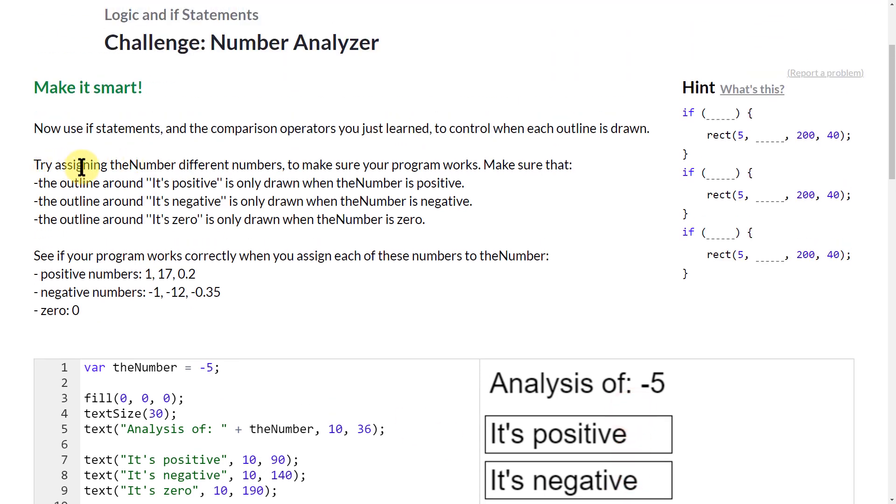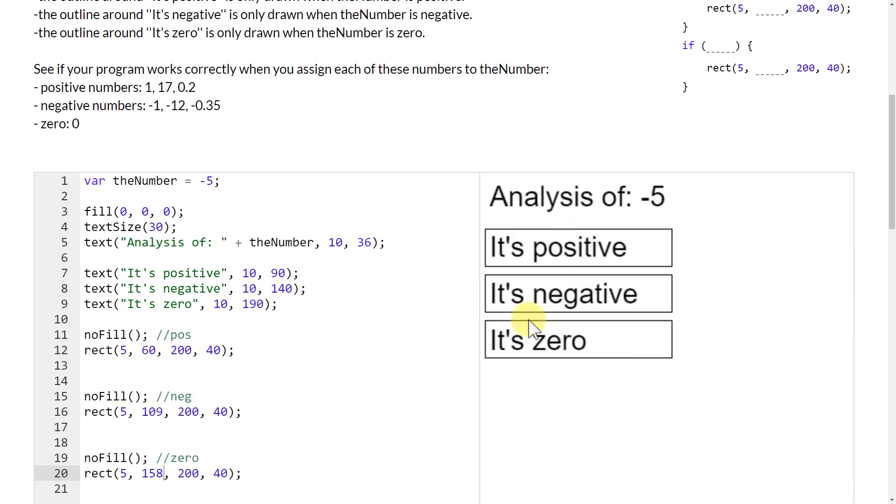The next step is I only want the rectangles to show up if the number actually applies to that. So I'm going to use if statements. I'm going to say if, then use my variable from above. I'm going to say if the number...